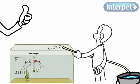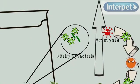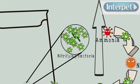But these bacteria do not grow overnight. To establish the correct amount in the aquarium filter, it naturally takes about eight weeks.